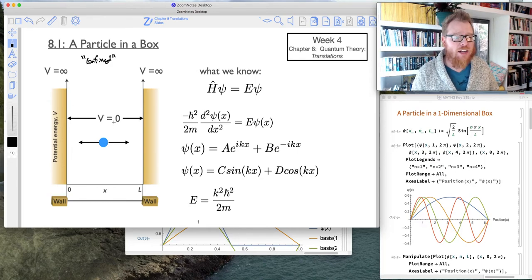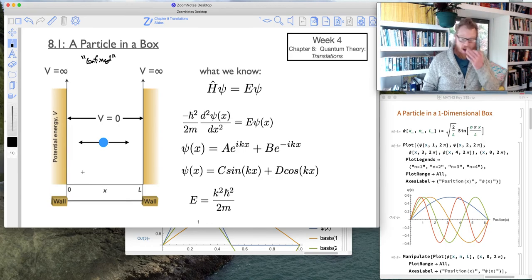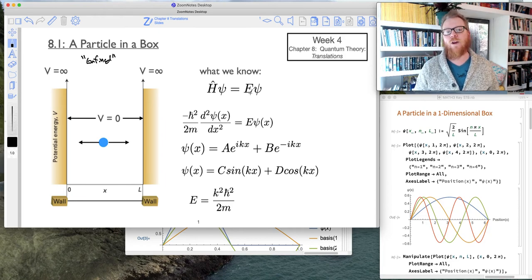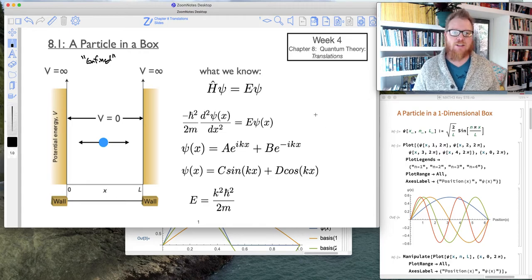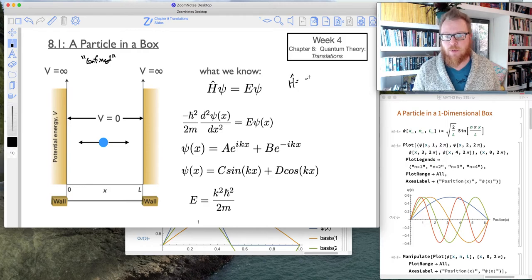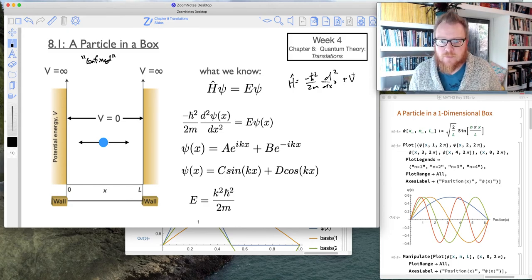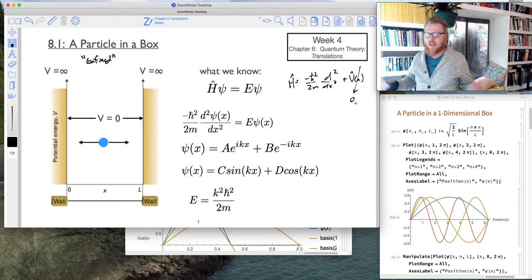Here's what we know already. We actually already know a fair amount about this particle in our box. So we know the Schrödinger equation, H psi equals E psi. And if I expand on that, recognizing here that my Hamiltonian operator is going to be negative h bar squared over 2m times the second derivative. And because we're saying the potential energy is zero, I can ignore that for now. So this is all kinetic energy.